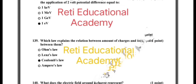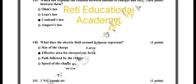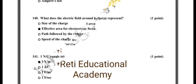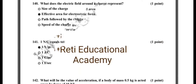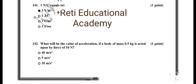Question number 139: which law explains the relation between amount of charges and force between them? The correct option is Coulomb's law. Question number 140: what does the electric field around a charge represent? The correct option is effective area of electrostatic force. Question number 141: 1 NC equals to, and the correct answer is 1 Vm.